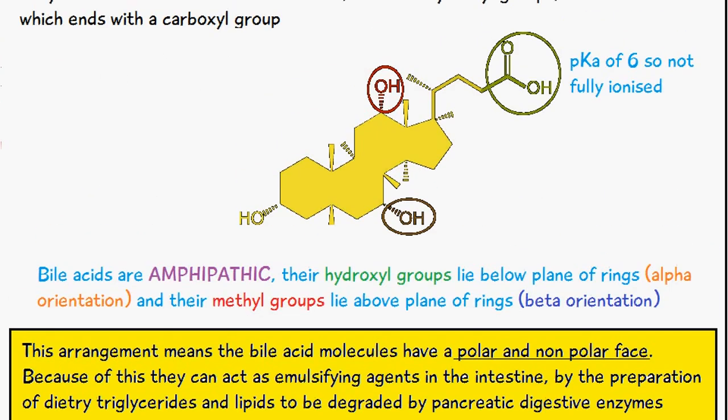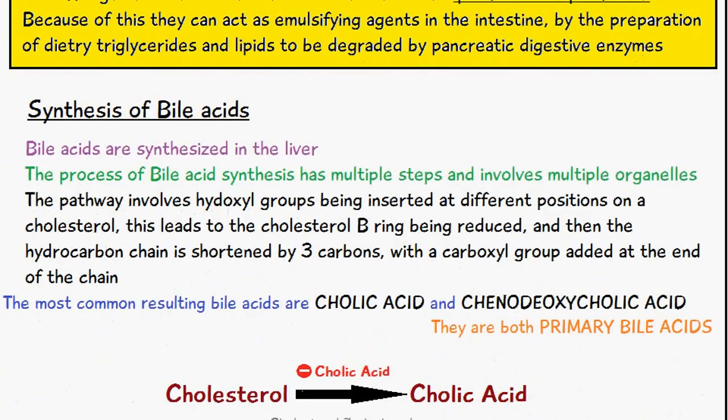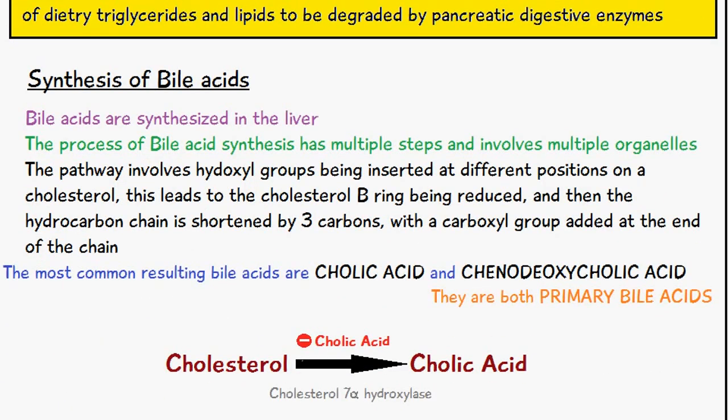This is pretty much the structure we discussed. The most common resulting bile acids are cholic acid and chenodeoxycholic acid, and these are both primary bile acids.